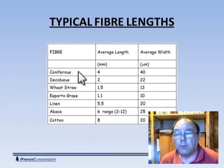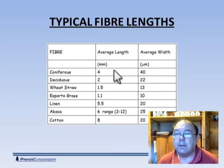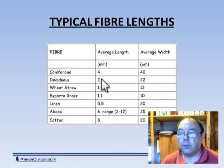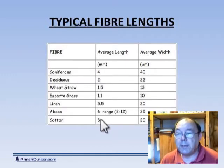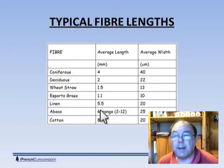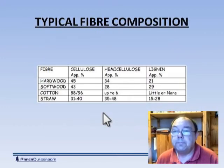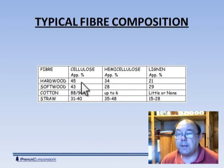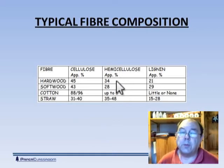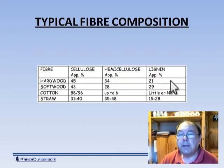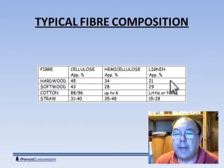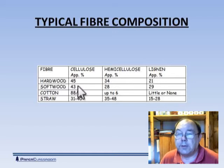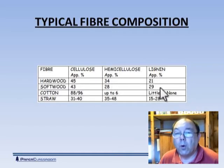Deciduous fibres — hardwoods — are typically half the length of a softwood. Cotton linters can be up to 8 millimetres long. Abaca fibres, used for making things like tea bags and coffee filters, can be up to 12 millimetres long or more. Looking at the constituents: hardwood is about 45% cellulose, 34% hemicellulose, and 21% lignin — the thing that holds all fibres together in the tree, almost like a hot melt adhesive. Softwoods have similar amounts of cellulose at 43%, less hemicellulose, but more lignin on average.